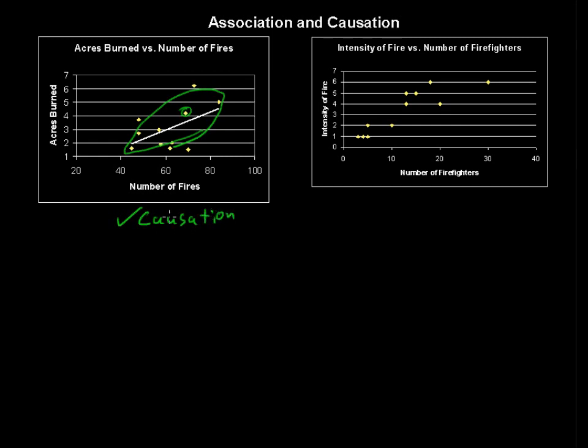On the next one, the next one is a little bit trickier. It's turned around. Intensity of the fire versus the number of firefighters. We've got the number of firefighters on the x-axis and the intensity of a fire on the y-axis. So when there's 10 firefighters at a particular fire, the intensity was only 2. And when there were 20 firefighters, the intensity was 4.